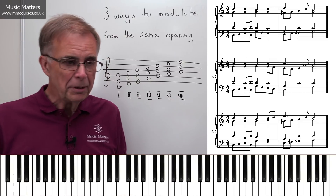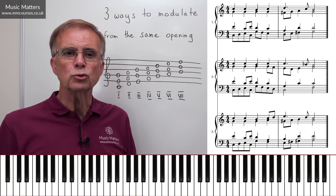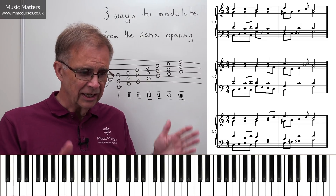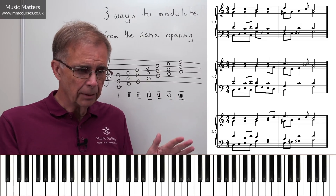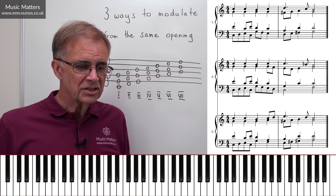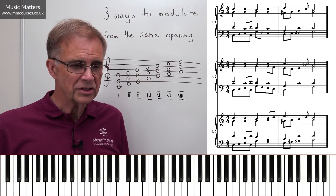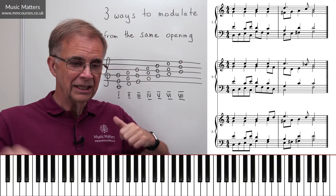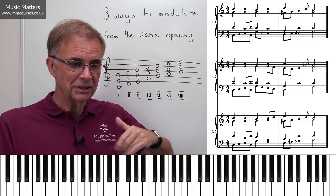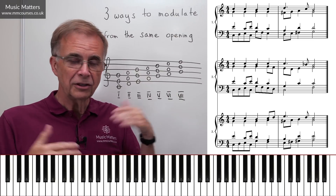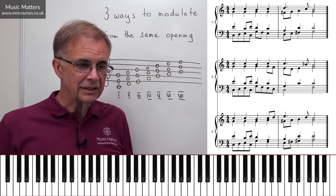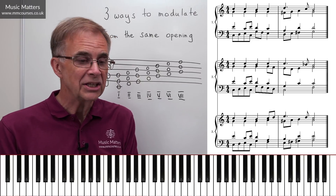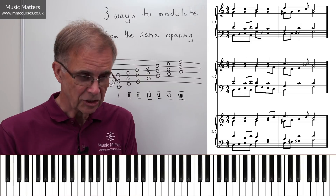Just before we go any further, let me play you these three examples. In all three we begin with the same opening three chords — the first one moves to the dominant key, the second to the subdominant key, the third to the relative minor. Here's C major modulating to the dominant key, G major.